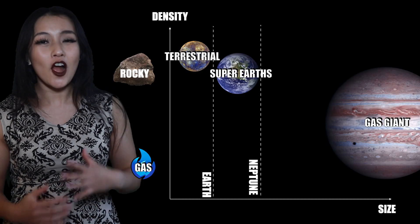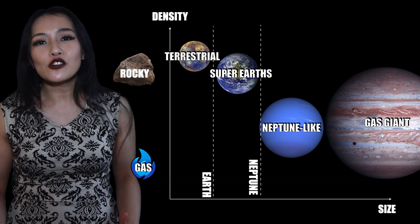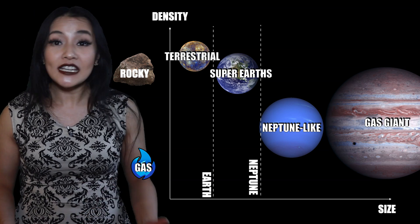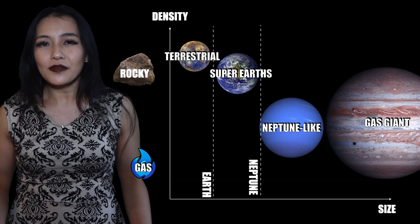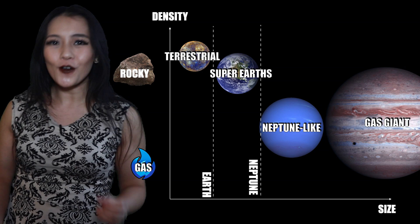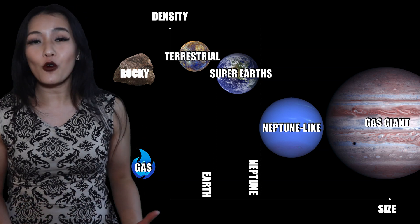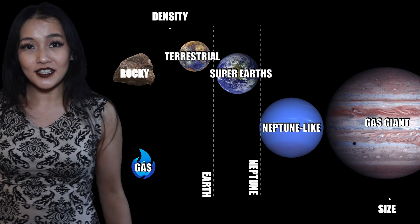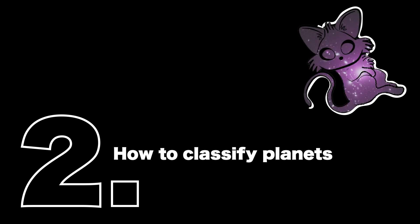Neptune-like planets are gaseous planets. They're made up of mostly helium or hydrogen, but with a rocky core. They are typically the size of Neptune or Uranus.